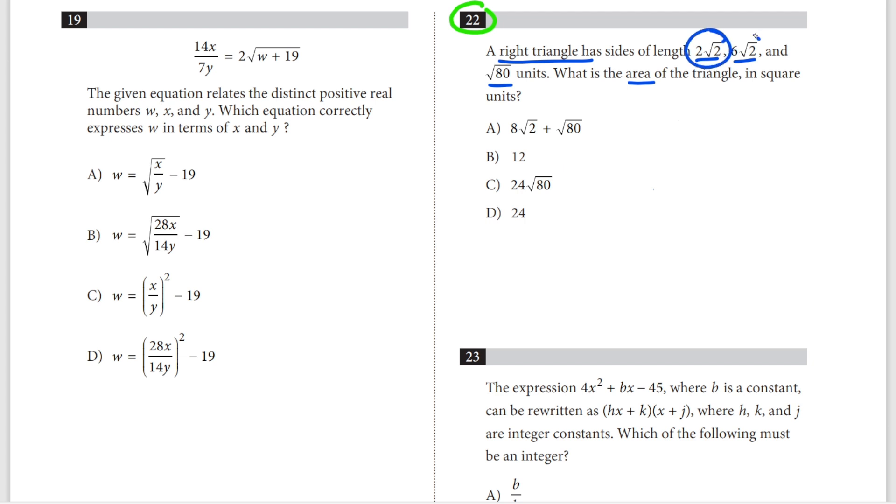Chances are these are the legs, but let's check. We have 8 plus 72 equals 80. That's true. So the area is 2√2 times 6√2 over 2. Cancel this out, and the answer is B.